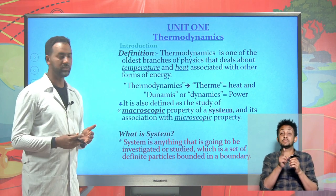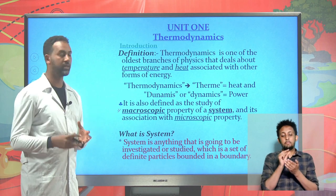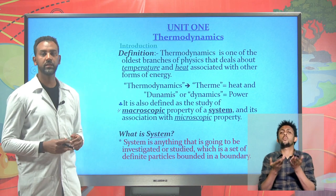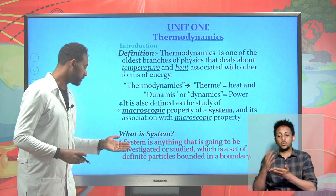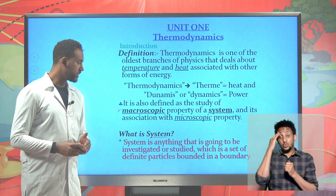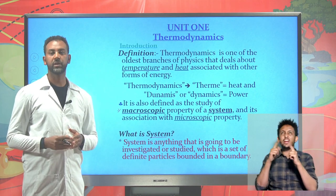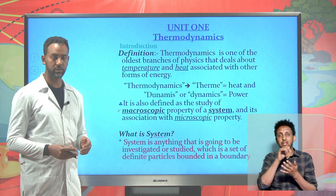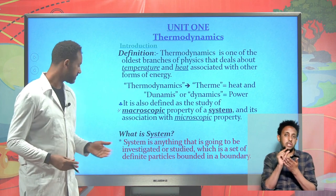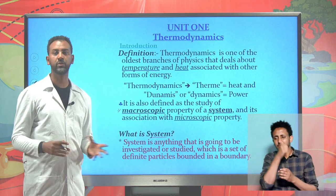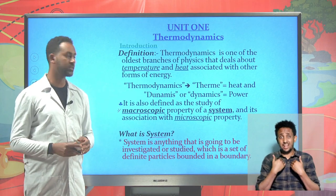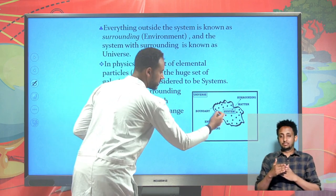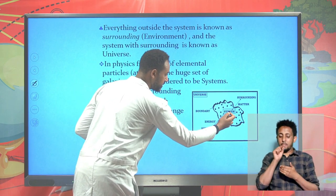So we should define what a system is. A system is anything which is going to be investigated or studied. In physics, a system can range from a very elemental particle to celestial or universe particles. Anything which is bounded in a given boundary and has definite particles can be considered as a system - it has a boundary and definite particles in it.